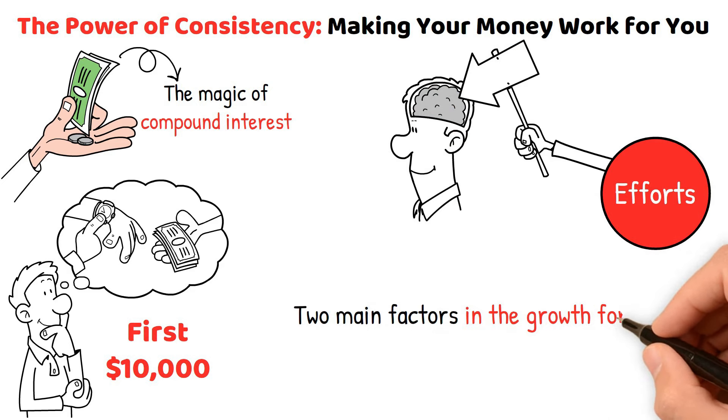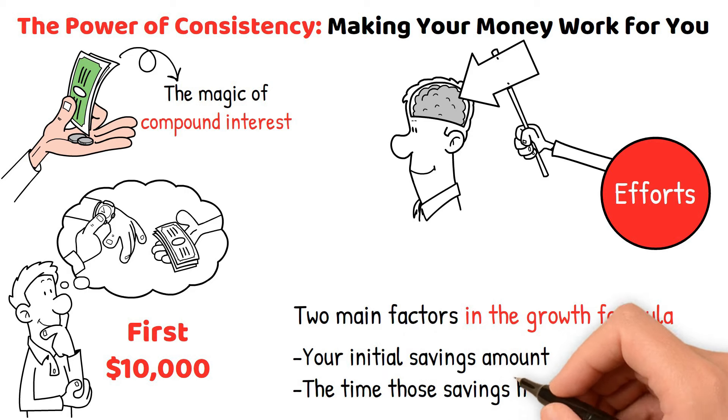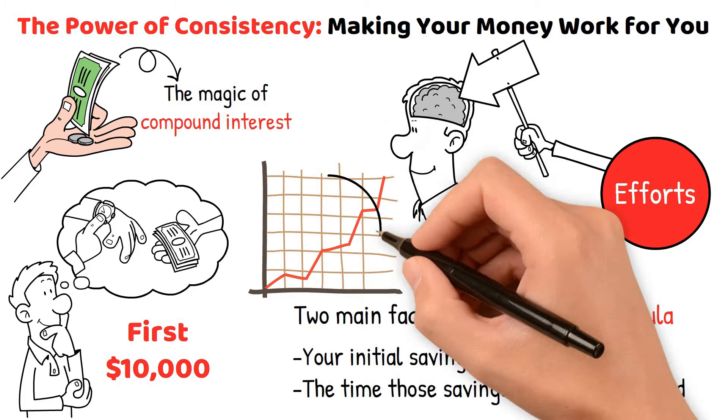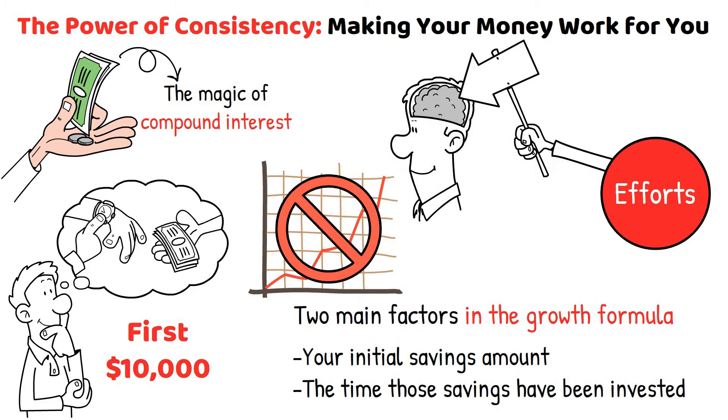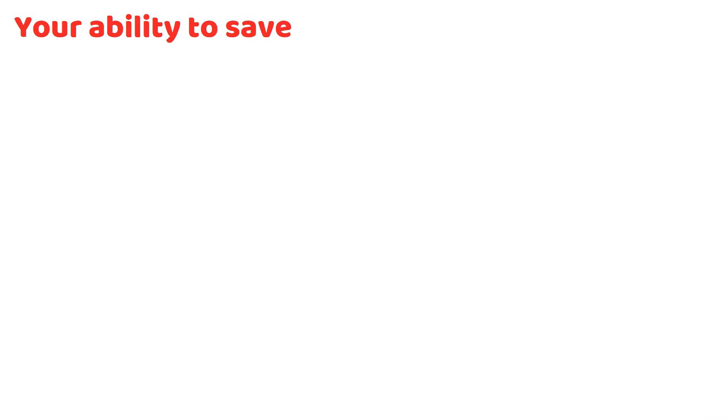Why? Because at this stage, the two main factors in the growth formula, your initial savings amount and the time those savings have been invested, are both still pretty small. That means the exponential growth we talked about earlier hasn't had a chance to take off yet. Here's what you need to focus on, your ability to save.